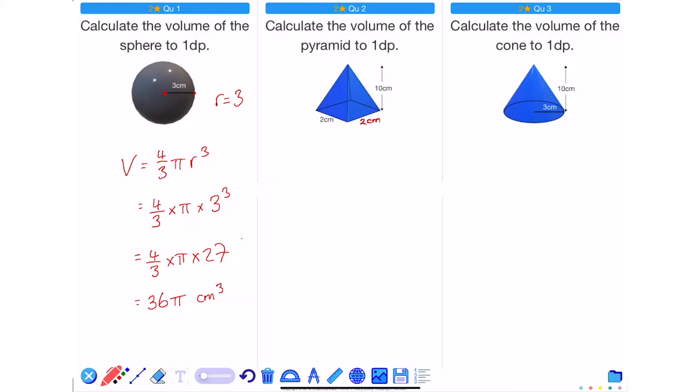This would be the answer if the question asked me to put it in terms of pi. But grabbing a calculator and rounding to one decimal place gives me 113.1 cm cubed. So to calculate the volume of a sphere, I use volume is equal to 4 thirds pi r cubed.